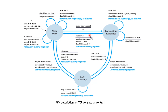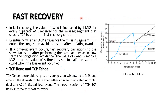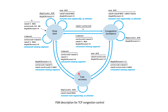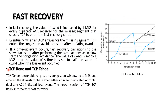In congestion avoidance state, if there is a timeout it goes to slow start. Basically, fast recovery manages the congestion window: at the time of a duplicate ACK it simply increases by the number of MSS, and if there are timeouts, SSThresh is set to CWND divided by 2, then CWND is reset to 1 and slow start begins. There are TCP Reno and TCP Tahoe techniques.